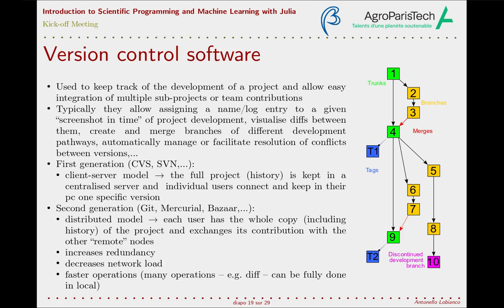The second generation of version control systems, like Git, Mercurial, and Bazaar, uses instead a distributed model where each user has the whole copy, including the history of the project, and exchanges contributions with other remote nodes. This undoubtedly has the inconvenience of having to replicate the disk space on each PC. But disk space is nowadays cheap; bandwidth is more of a limiting factor.